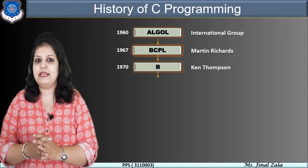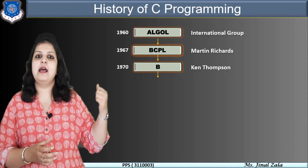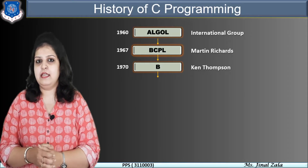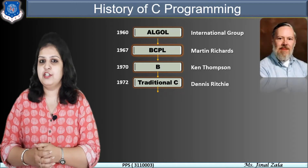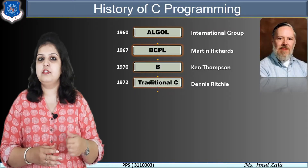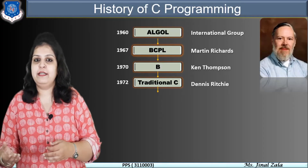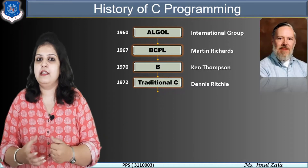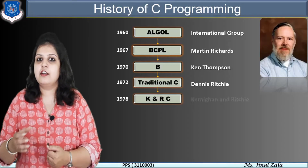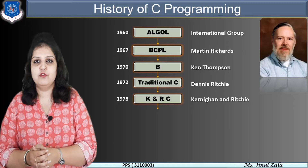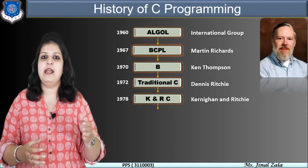B language was mainly created for making system software. But these languages are type-less languages. That is why in 1972 Dennis Ritchie created a language called traditional C language. He used the features of BCPL and B languages and introduced new concepts like data types, different operators, and many more functions. Then in 1978, Kernighan and Ritchie published a book called C Programming, which became popular as K and R C.